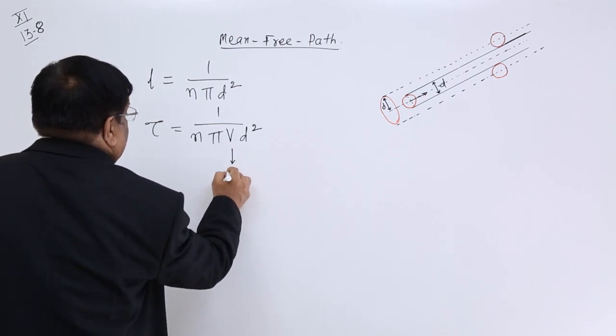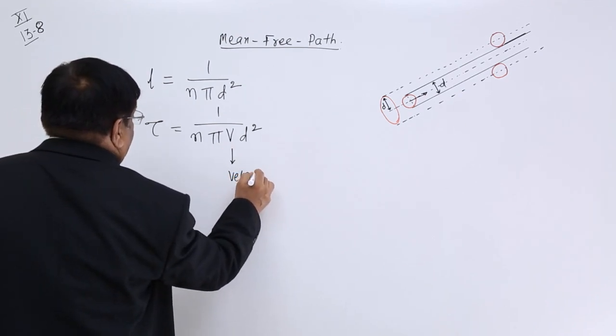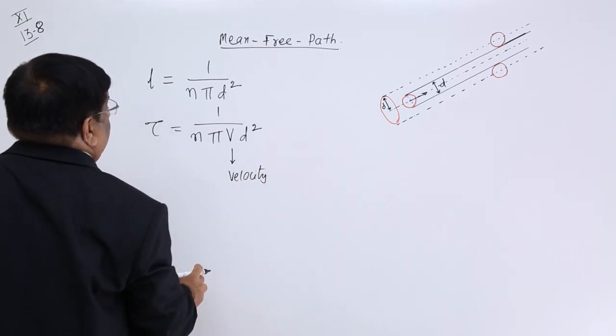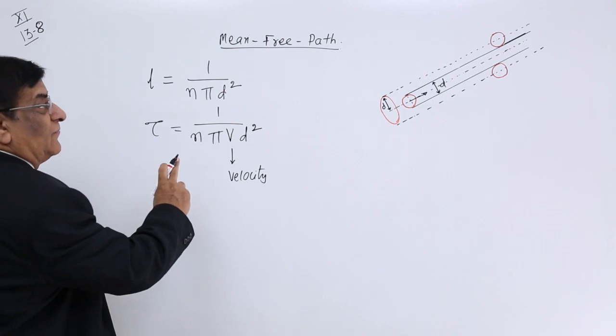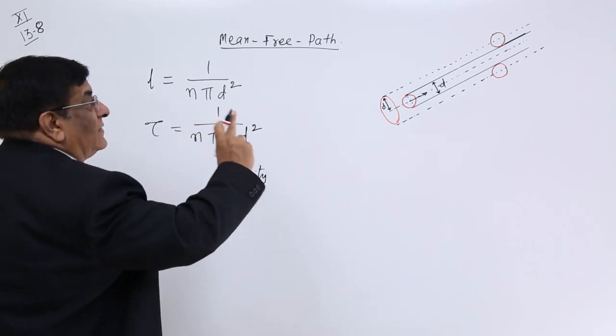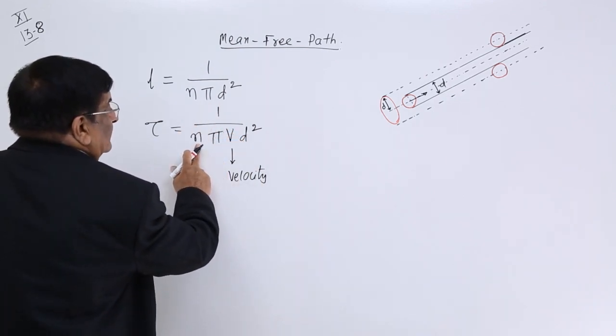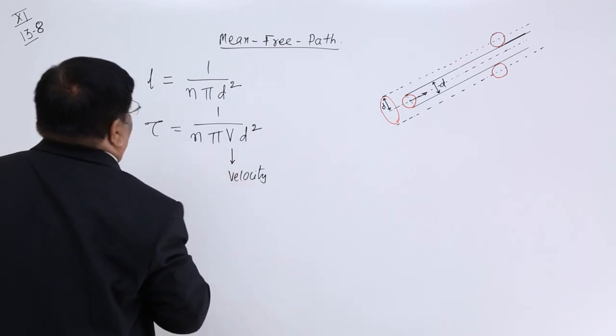This is velocity and this is number of molecules in one unit volume, this d is diameter.